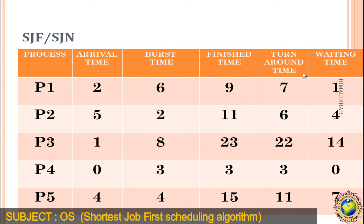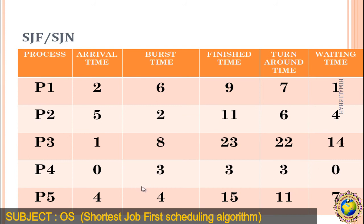The turnaround time is Finish Time minus Arrival Time. So: P1 = 9 - 2 = 7, P2 = 11 - 5 = 6, P3 = 23 - 1 = 22, P4 = 3 - 0 = 3, and P5 = 15 - 4 = 11. The waiting time formula is Turnaround Time minus Burst Time. So: P1 = 7 - 6 = 1, P2 = 6 - 2 = 4, P3 = 22 - 8 = 14, P4 = 3 - 3 = 0, and P5 = 11 - 4 = 7.